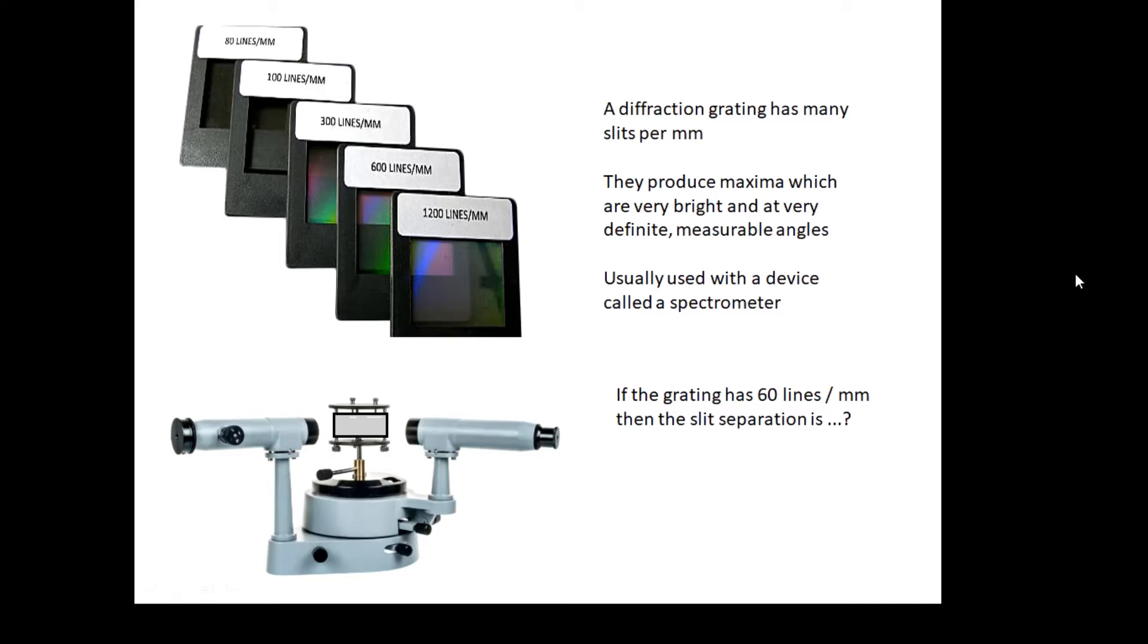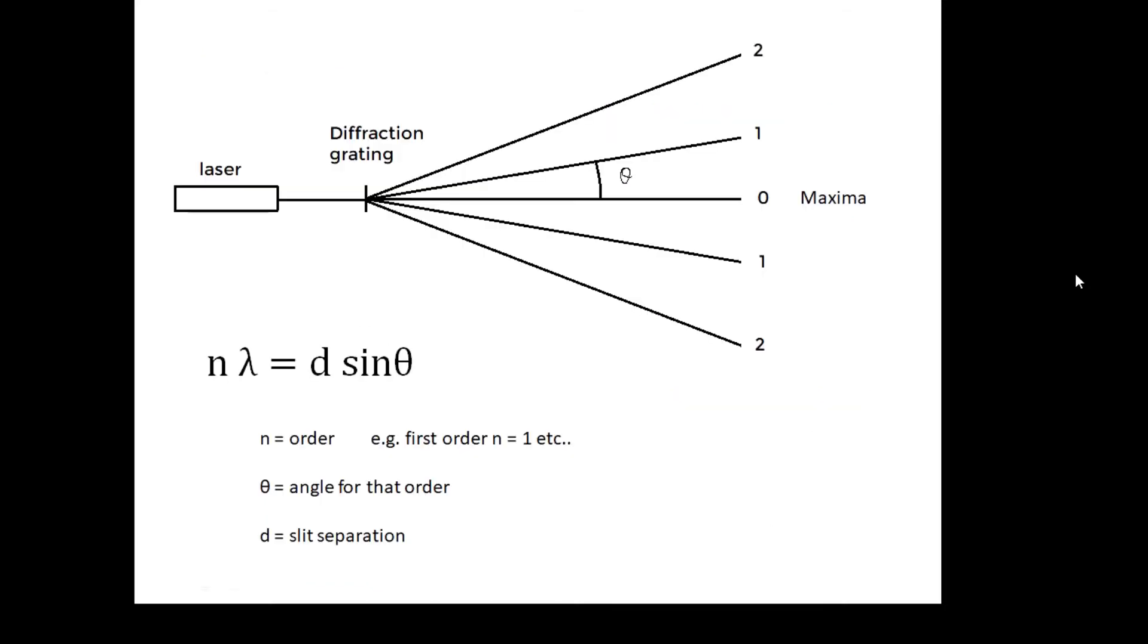60 lines per millimeter, what is the slit separation? Well, 60 lines per millimeter is 60,000 lines per meter, and 1 over 60,000 is that. Be able to do that calculation. The equation for a diffraction grating